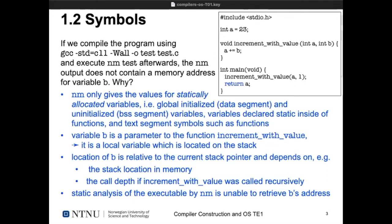`b` is on the stack because it's a local variable, so its location changes throughout the life of the program. If we called `increment_with_value` recursively, the location of `b` depends on the stack location, which depends on what your OS chose as stack memory range and the call depth. For every recursive invocation we get another copy of `a` and `b`. Static analysis cannot retrieve the address of `b` — we can only get it at runtime, and `nm` just looks at the compiled program without running it.